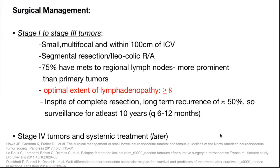For surgical management of stage 1 to 3 tumors — which are small, multifocal, and within 100 cm of the ileocecal valve — segmental resection, ileocolic resection, and anastomosis can be done. More than 75% have mets to regional lymph nodes, which are more prominent than the primary tumors. Due to desmoplastic reactions from serotonin, the optimal extent of lymphadenectomy is ≥8 nodes. Although complete resection is done, long-term recurrence rate is nearly 50%.